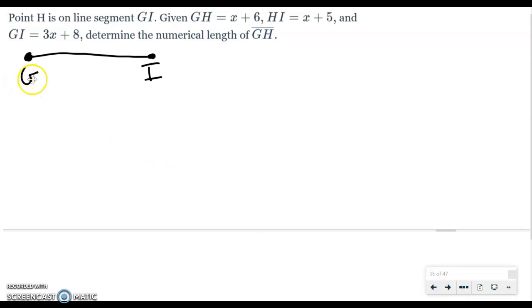First I'm going to draw that line segment GI, and then I'm going to put H in the middle of it. Now, once I have this, I realize that G to H plus H to I equals G to I. So that's what I'm going to mark out here. GH plus HI equals GI.